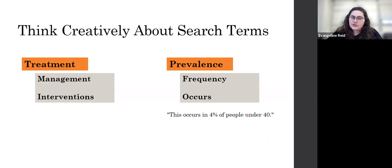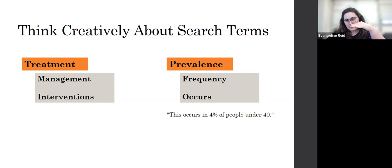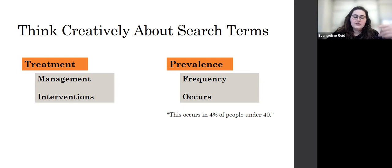When we're searching, we want to think creatively about what we're putting into the box, because the database is really just finding the exact term we put in. Let's say we're looking for the concept of treatment — we could say our disease and treatment, and we might get lots of articles. But if we're having trouble, we would want to try new words. So instead of treatment, we could say management or interventions.